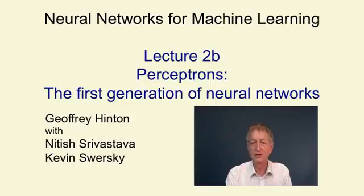In this video, I'm going to talk about perceptrons. These were investigated in the early 1960s, and initially they looked very promising as learning devices, but then they fell into disfavour because Minsky and Papert showed they were rather restricted in what they could learn to do.